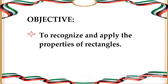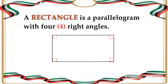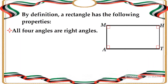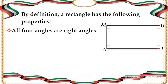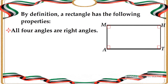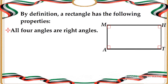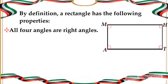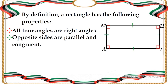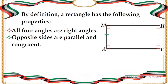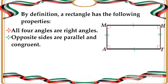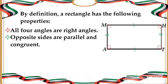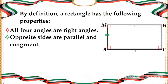A rectangle is a parallelogram with four right angles. By definition, a rectangle has the following properties: all four angles are right angles. You can see in the diagram that I put a red square in each corner — it symbolizes 90 degrees or a right angle. Opposite sides of a rectangle are parallel and congruent. I marked them with a green line; the top and the bottom part have the same length and are parallel, while the left side and the right side are also parallel and congruent.